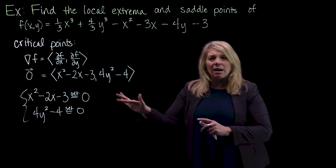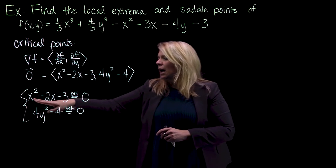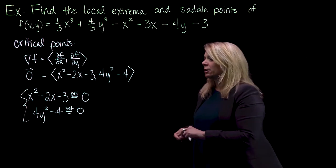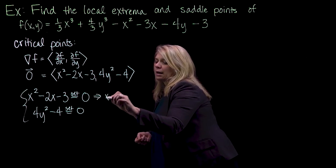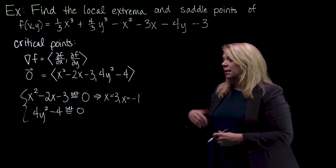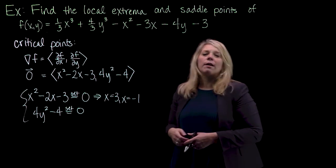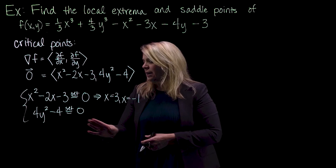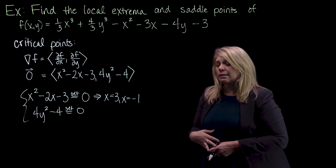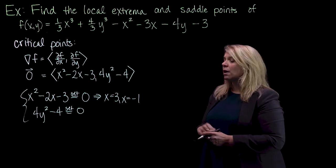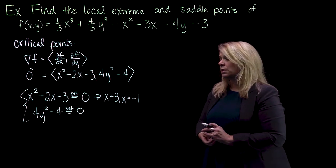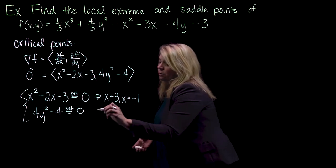I'll talk through the algebra without writing it all out to save space. The first equation factors into (x minus 3)(x plus 1), and setting each factor equal to zero gives x equals 3 and x equals negative 1. For the second equation, dividing through by 4 gives y squared minus 1 equals 0. Factoring or solving gives y equals plus or minus 1 — you should expect two solutions from a degree-2 polynomial.